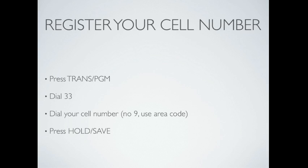The first step is to register your cell phone number. To do that, press the Trans/Program button, dial 33, dial your cell phone number — you do not need to dial 9, but you should use your area code — then press Hold/Save.